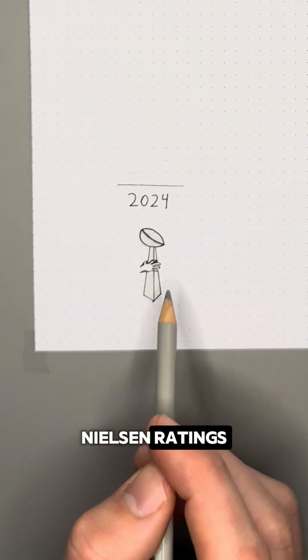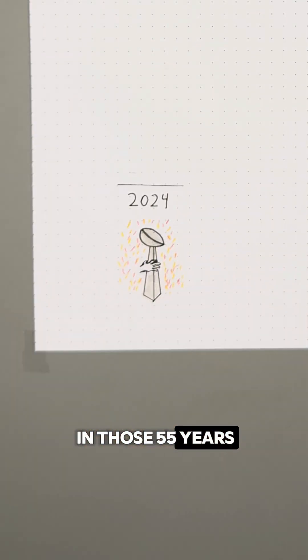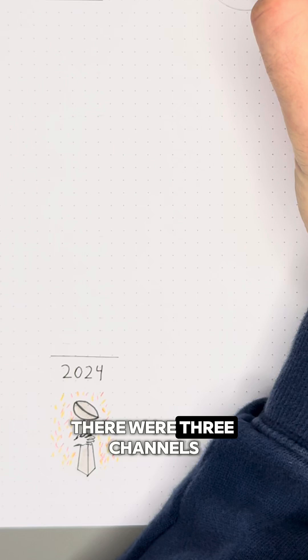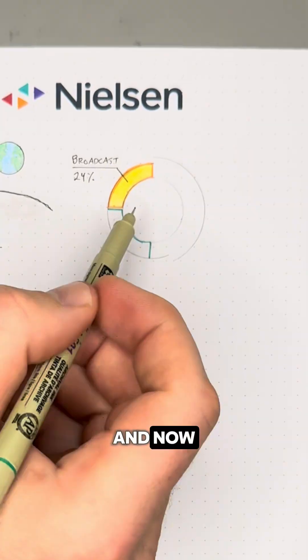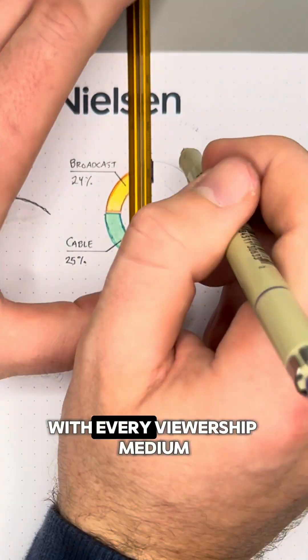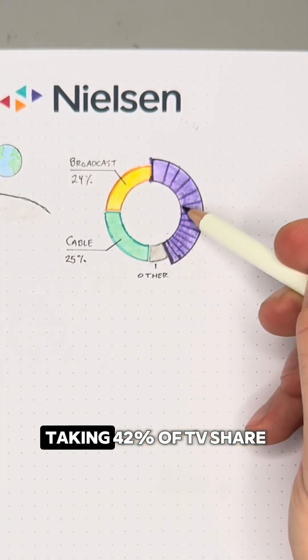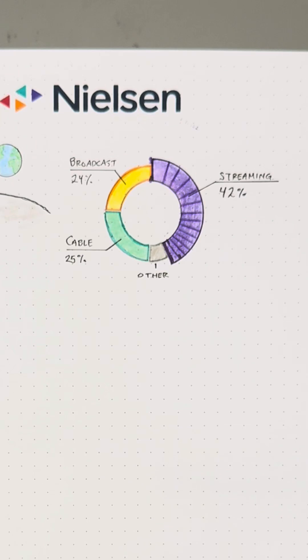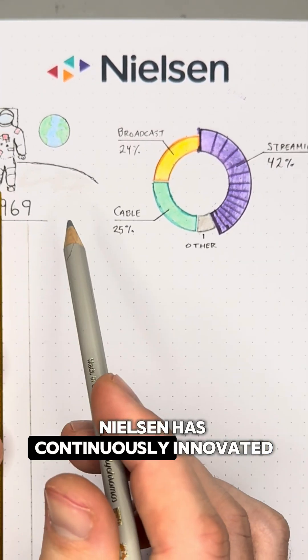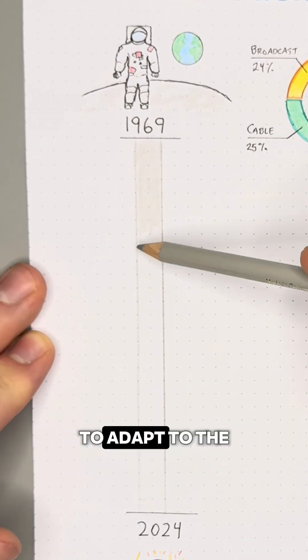The common thread? Nielsen ratings. A lot has changed in those 55 years. In 1969, there were three channels on broadcast television, and now the media landscape has fractured like never before, with every viewership medium available across devices and dozens of streamers taking 42% of TV share. But with all that's changed, Nielsen has continuously innovated its methodologies to adapt to the new environment.